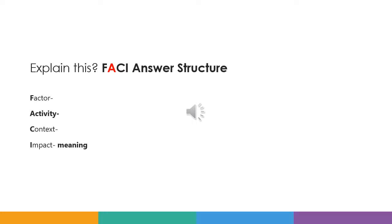So we need to be able to explain this in SQA language using our FACI answer structure. Just to recap, we have added an A to the FCI answer structure just to make sure that we put the activity in. So we'll be looking at Factor, Activity, Context, and Impact, which always starts with 'meaning.'